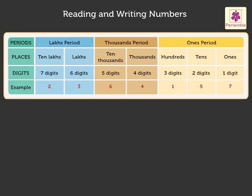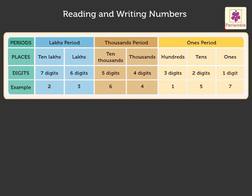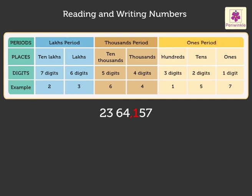This is a seven-digit number and is placed in the ones, the thousands and the lakh periods. Remember kids, while inserting commas, we count the digits from the right to the left. So, we insert the first comma between the third and the fourth digit, that is, where the ones period ends and the thousands period starts.